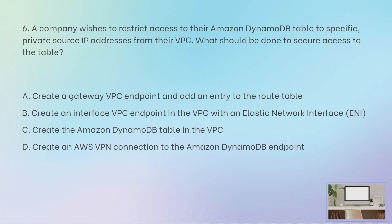A company wishes to restrict access to their DynamoDB table to specific private source IP addresses from their VPC. What should be done to secure access to the table? There are two types of VPC endpoints: interface endpoint, which uses an elastic network interface, and gateway endpoint. For DynamoDB or S3, which are internal AWS services, you connect through a gateway endpoint by adding an entry to the route table. The correct answer is A — create a gateway VPC endpoint and add an entry to the route table.